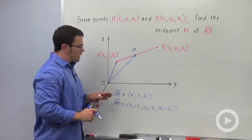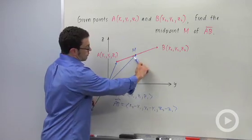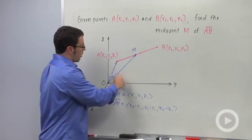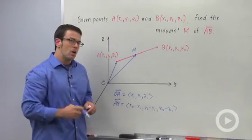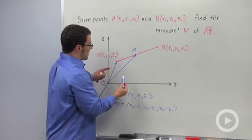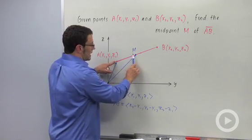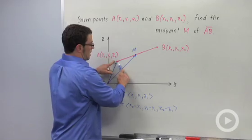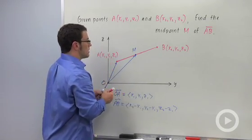Okay, how are we going to get position vector OM from OA and AB? Well, let's make the observation that the vector that starts at point A and ends at M is half of the vector that goes from A to B.